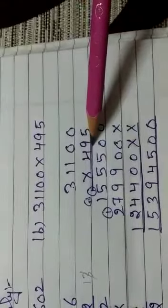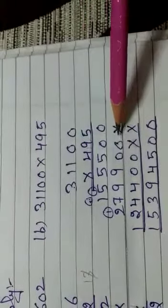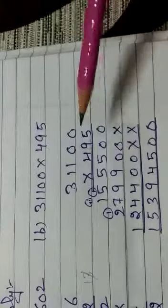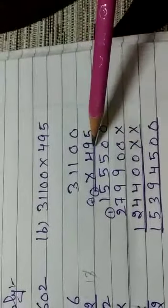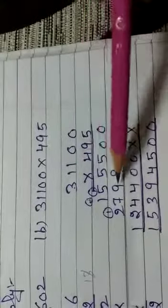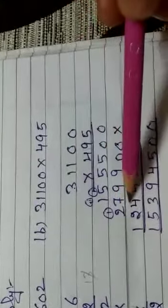And next, you have your digit in 10 place, 9. You will cross and start. 9, 0 by 0. 9, 0 again 0. 9, 1 is 9. 9, 1 is 9. 9, 3 is 27.